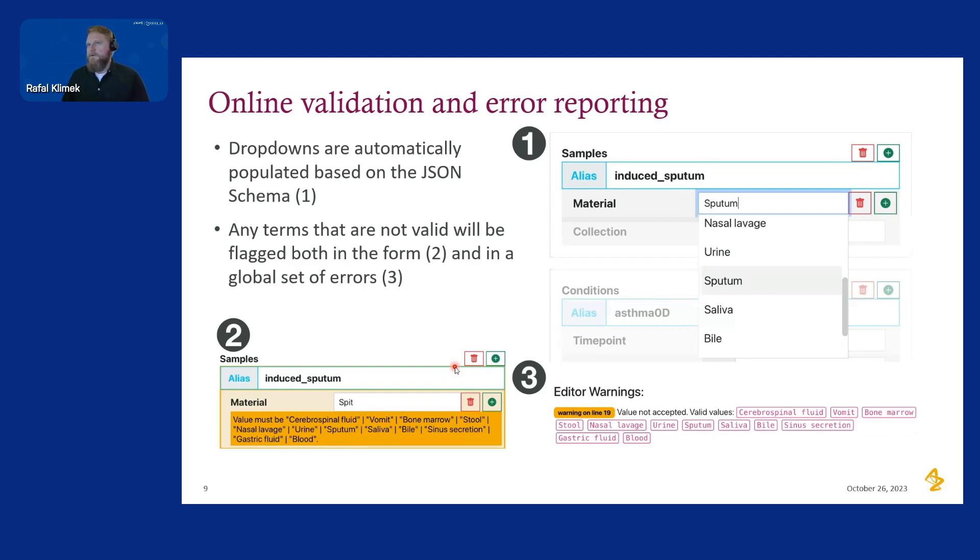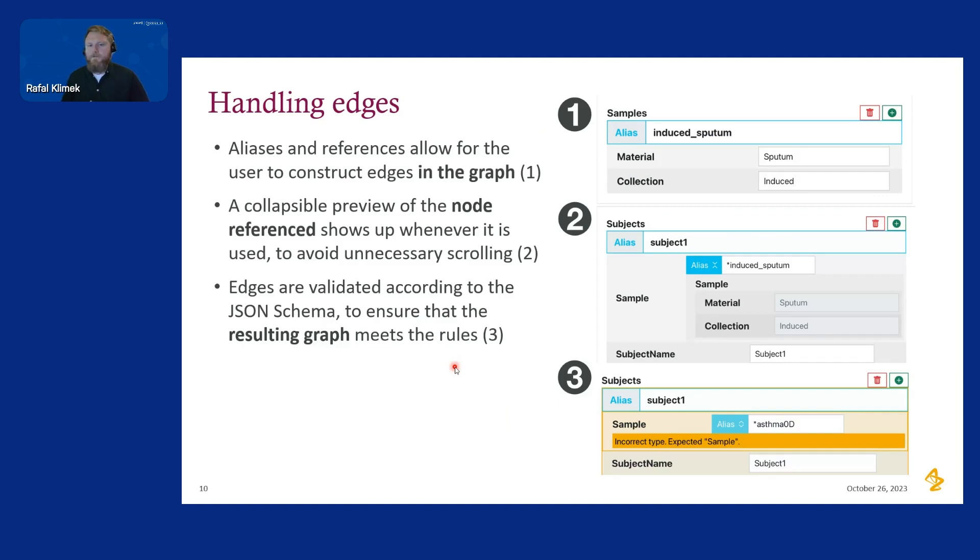I mentioned that YAML lets us create graphs. Aliases are very helpful with that. For example, here you can see that we can define a sample and then reuse it in a subject. Here you can see a collapsible preview because YAML files can get pretty big, especially when they are presented in this way. Anchors are a crucial feature of YAML that we make use of for allowing our users to reuse objects.